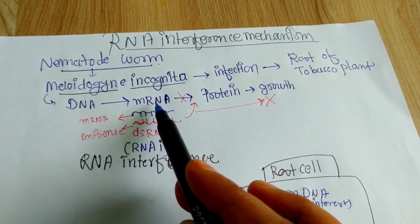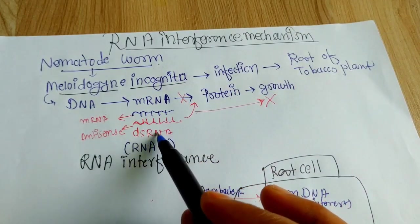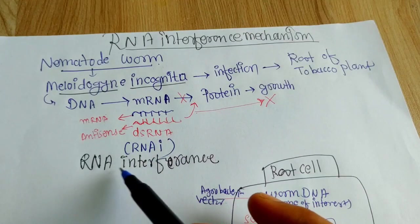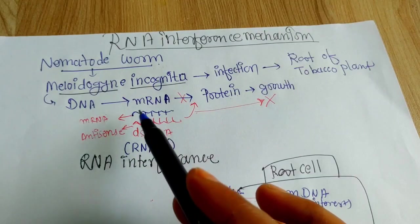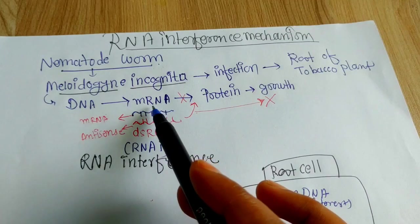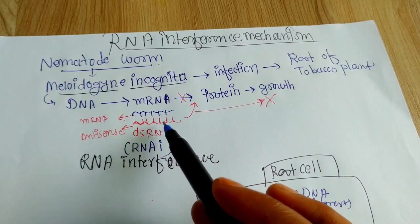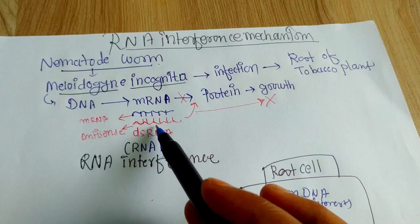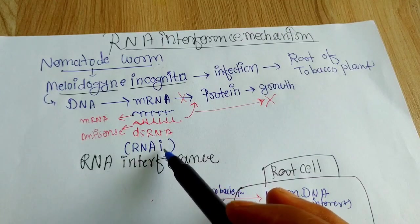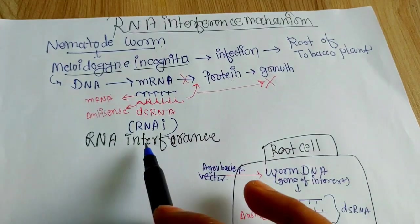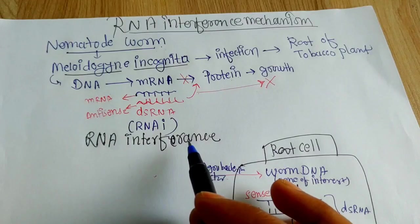So if you block this mRNA by making a double-stranded RNA, this will create RNA interference. You have the mRNA of nematode and if you add an antisense RNA strand, then this will create the double-stranded RNA. So this is how the RNA interference works. This is the basic mechanism.